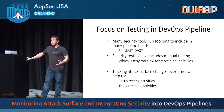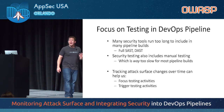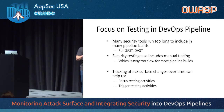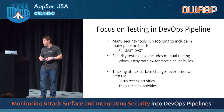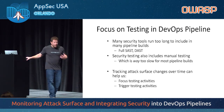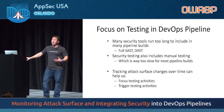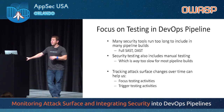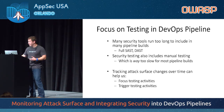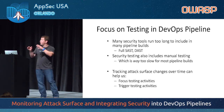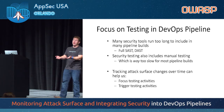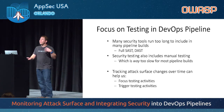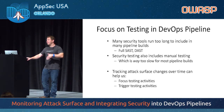Understanding how the attack surface changes over time can also help you trigger testing activities. When you see enough changes that you believe new user stories have been included in the application, maybe it's time to get your manual tester to go in and look at the new stuff that has been exposed. If you're looking at how to economize from a time standpoint, understanding the attack surface and how it changes over time is really valuable because it helps you focus first on what is new — since the new stuff has never been subjected to testing — and also looking to understand what behavior has likely changed.